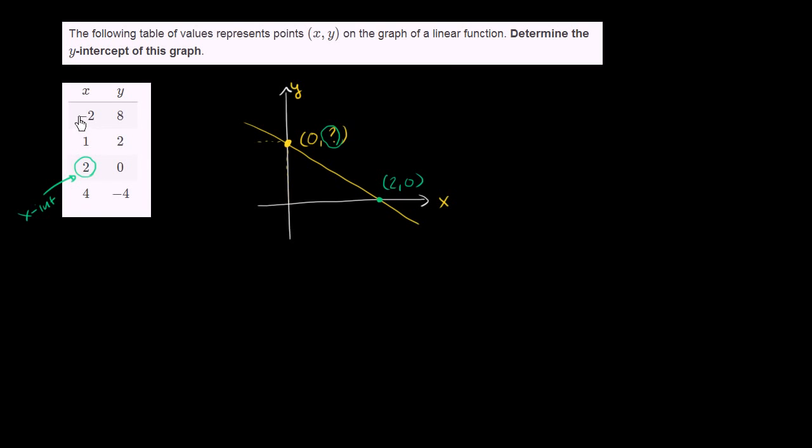Well, let's see. They give us what happens to y when x is negative 2, when it's 1, when it's 2, when it's 4. So maybe we can backtrack from one of these to get back to what happens when x is equal to 0. So let me rewrite this table so we can give ourselves a little bit more breathing room. So let's say we have x and we have y.